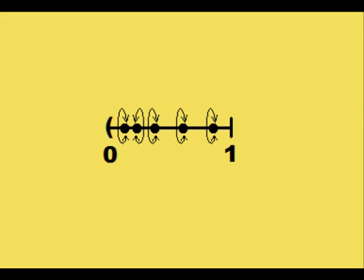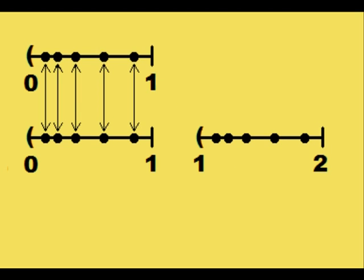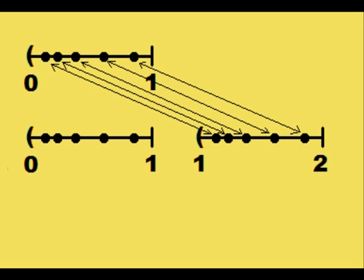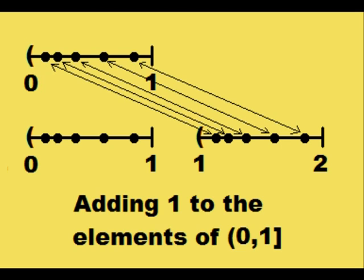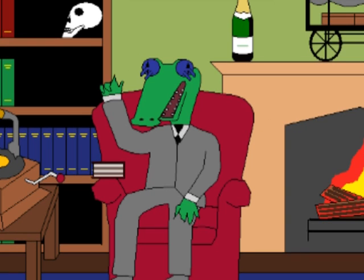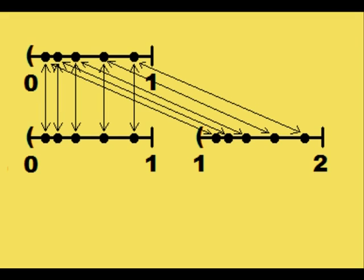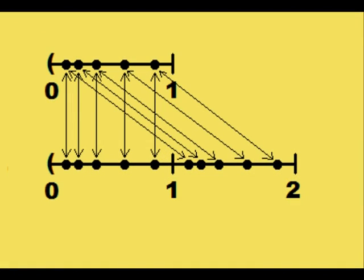Every element in [0,1] is obviously in itself with no stray elements. And it doesn't take much to show that every element in [0,1] is also in [1,2] if you just add 1 to every element in [0,1], and no elements are left over either. If you combine [0,1] into a union with [1,2], you get [0,2] with no overlapping because of the way the endpoints were chosen.